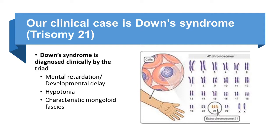The dysmorphic features is just one of the three criteria, and it contains a bunch of peculiar features. You may find all of them in the exam case, or you might not. If you did not find all of the dysmorphic features, do not worry — as long as the case has some sort of developmental delay, hypotonia, and some abnormal features, you have clinically diagnosed a probable Down syndrome.